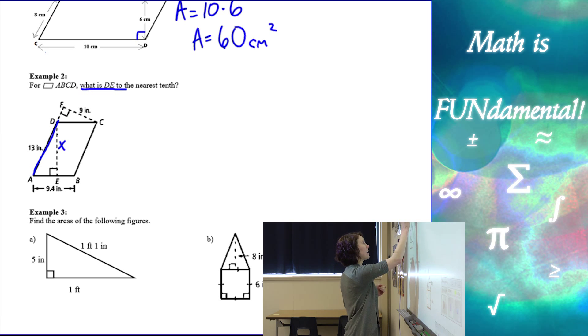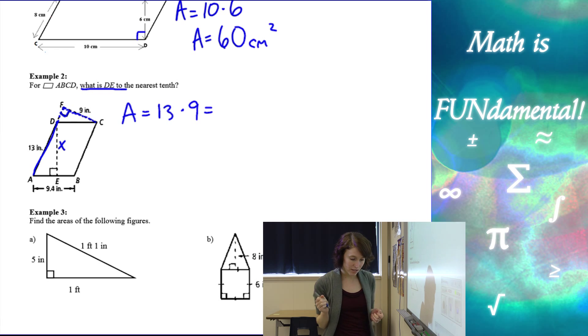then this length here is going to be perpendicular to that base. So I can find my area taking 13 times 9, and 13 times 9 is 117 inches squared. So my area is 117 inches squared.